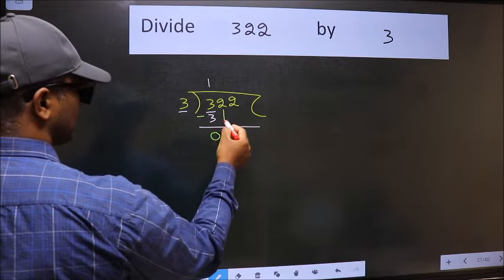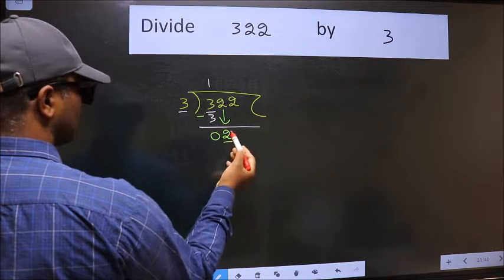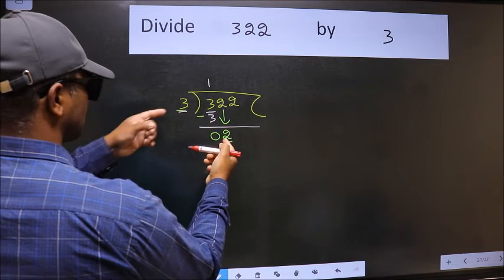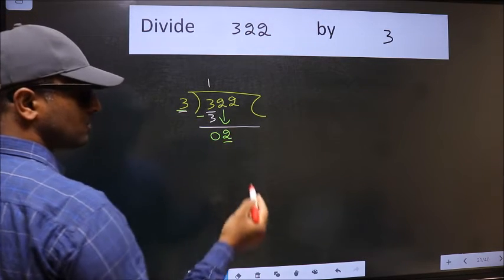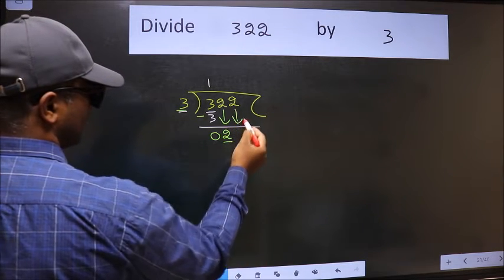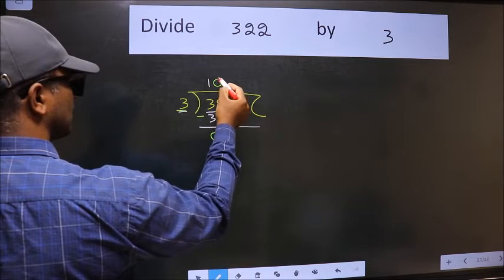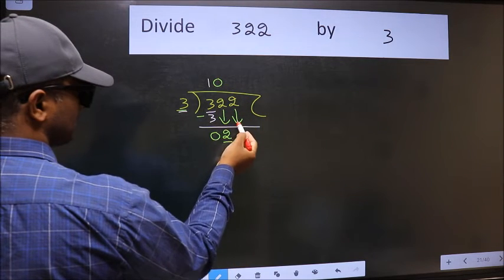After this, bring down the beside number, so 2 down. Now here we have 2 and here 3. 2 is smaller than 3, so we should bring down the second number. The rule to bring down the second number is we should put 0 here. Then only we can bring this number down.